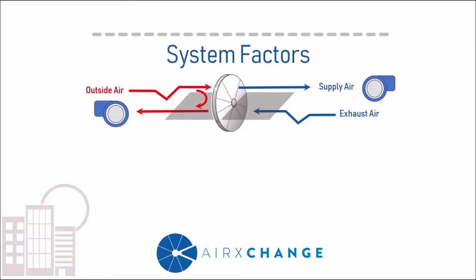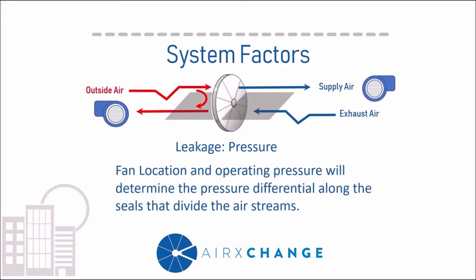What are the primary drivers that affect leakage? In comfort conditioning applications, leakage and carryover are the primary drivers determining EATR and OACF. Leakage is a function of pressure — and what determines pressure in a cabinet? Your fans do, more specifically the fan location and the operating pressure as it corresponds to the energy recovery component. Each component has seals on both the building side and the outdoor air side. The static pressure determines the pressure differential across those seals. The greater the differential, the greater the driving mechanism for leakage.